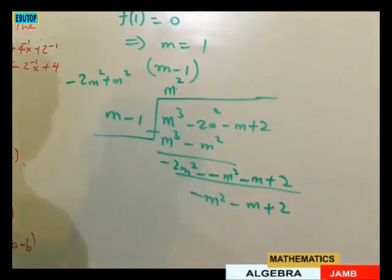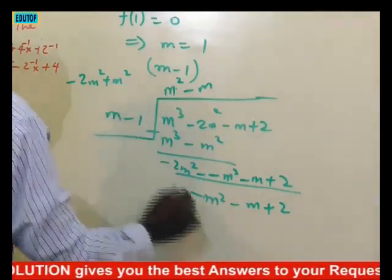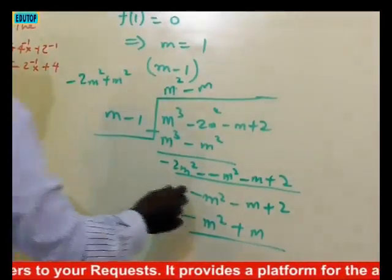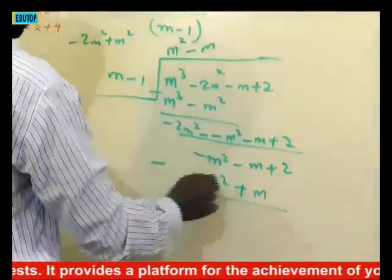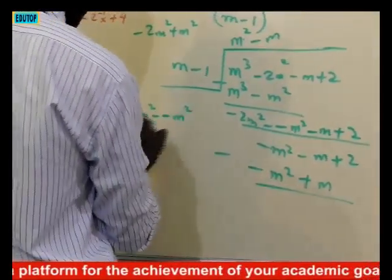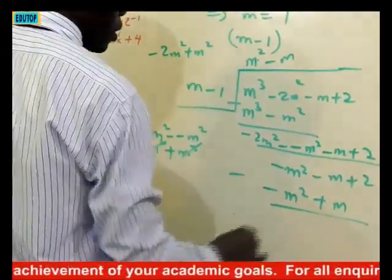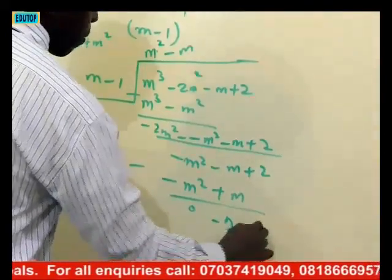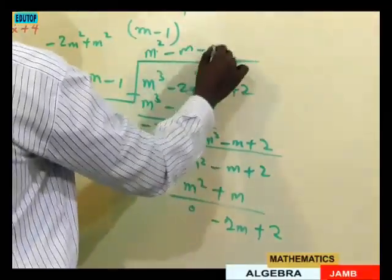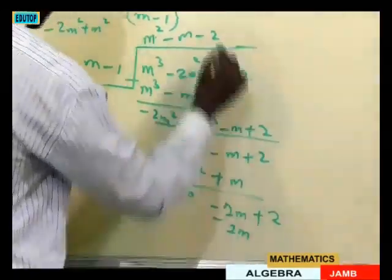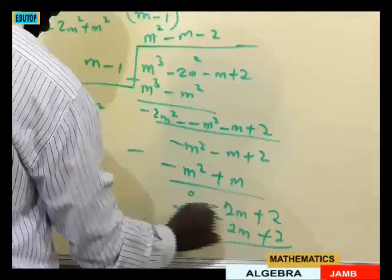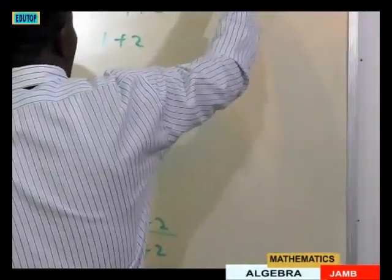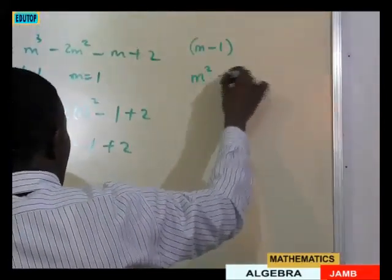Dividing minus m squared by m gives minus m. Multiplying minus m by m minus 1 gives minus m squared plus m. Subtracting, the minus m squared terms cancel, and we get minus 2m plus 2. Dividing minus 2m by m gives minus 2; multiplying minus 2 by m minus 1 gives minus 2m plus 2. Subtracting gives remainder 0. So the quotient is m squared minus m minus 2.